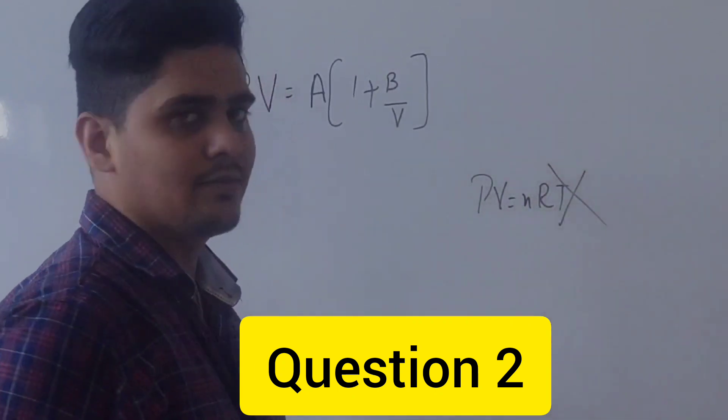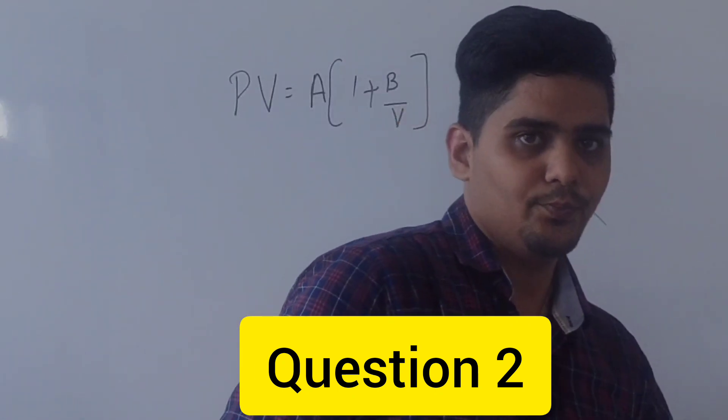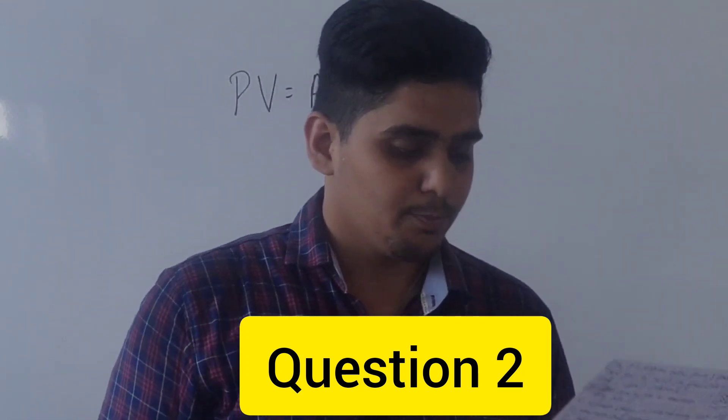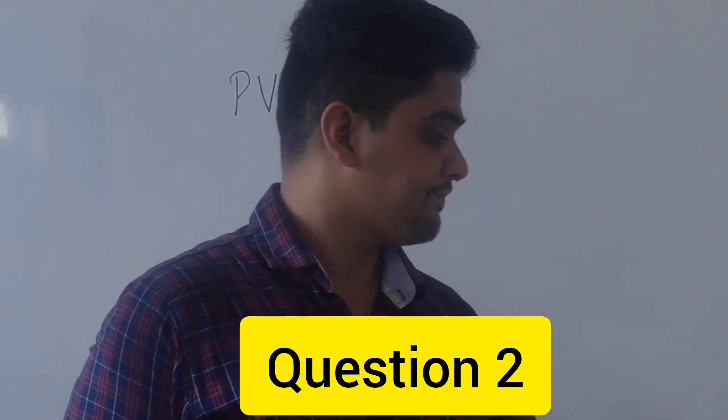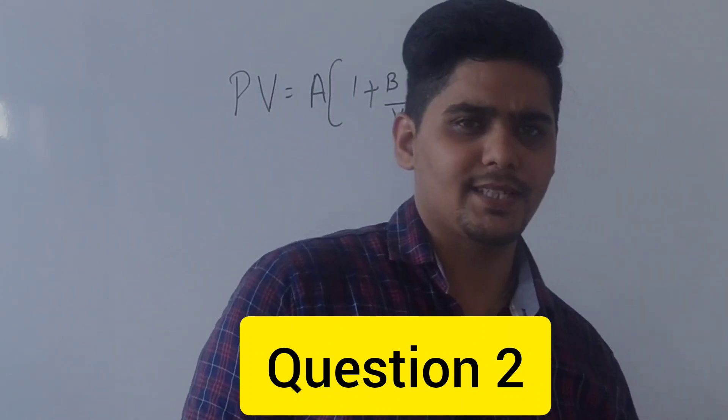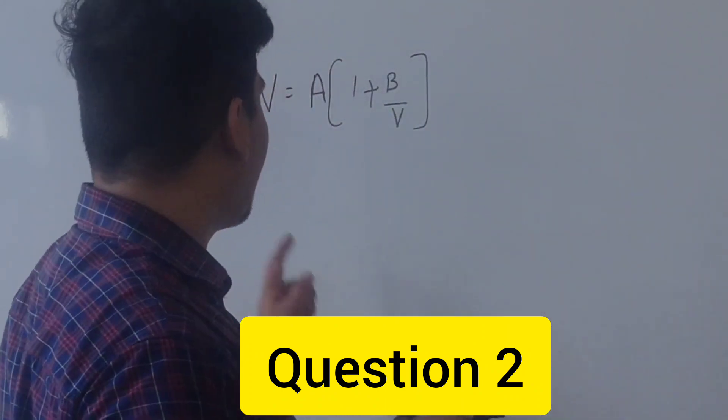This is not true. PV is the equation and we have to find the work done by the gas in an isothermal process. This is also important because temperature is constant now.